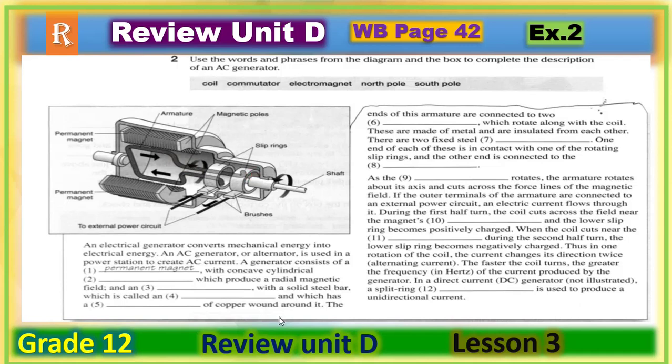Now, time to check your answers. Let's have a look first at the words in the box: coil, commutator, electromagnet, north pole, south pole. Do we have to use all the words from here only? No. As I told you before you start the exercise, you can use the words from here, from the diagram here. Now let's read and check your answers. Number one: with. Number two: magnetic poles.